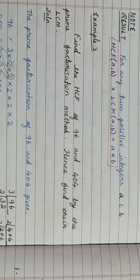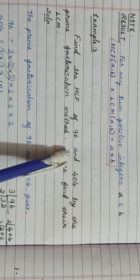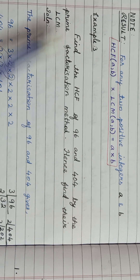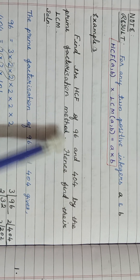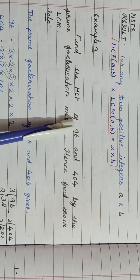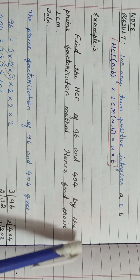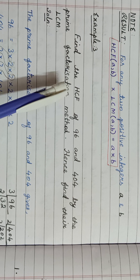Example 3. The question is: find the HCF of 96 and 404 by the prime factorization method. Hence find their LCM. So first they are giving you two numbers, and they are asking us to find the HCF first using the prime factorization method.